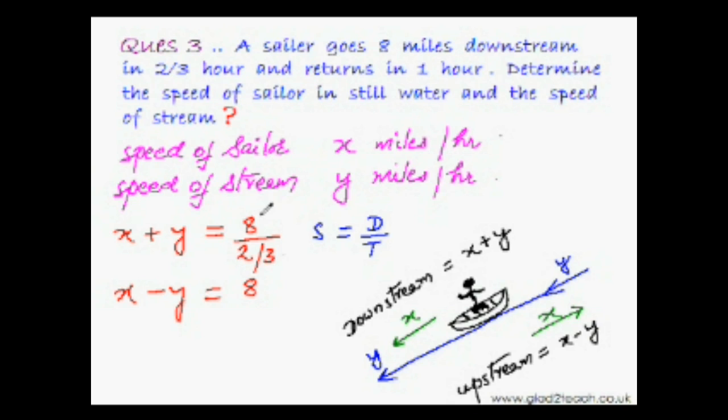And we can further simplify this fraction. 2 times 4 is 8 and this over 3 will get multiplied with 4. So 4 times 3 is 12. So we can put 12 over here. Now we can easily solve this equation. Plus y and minus y cancel each other out. x plus x would be 2x and 12 plus 8 is 20. So that means x would be equal to 20 divided by 2, that is 10.